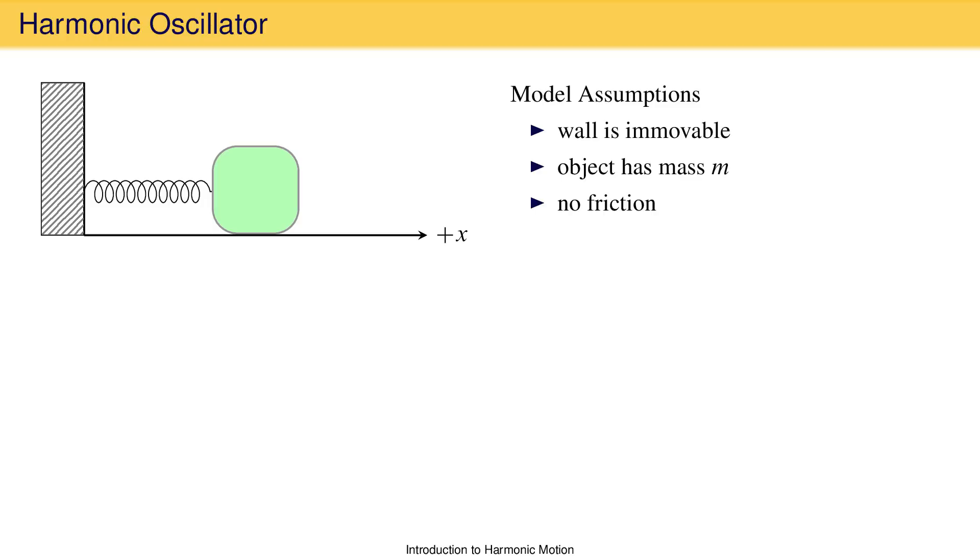We then attach that mass to the wall with a spring. This spring will be assumed to be massless so that we don't have to account for it anywhere in our mathematical equations we'll eventually set up to describe this system. Furthermore, we will assume there is no gravity.